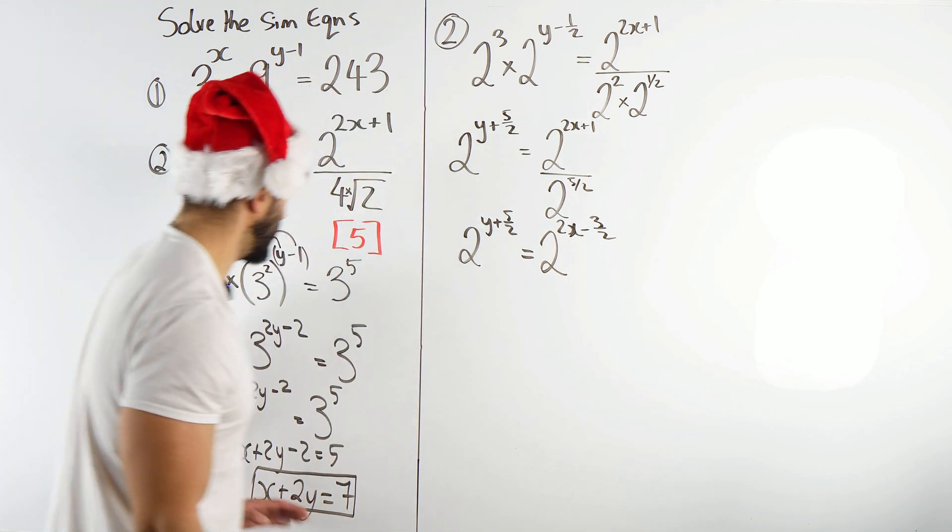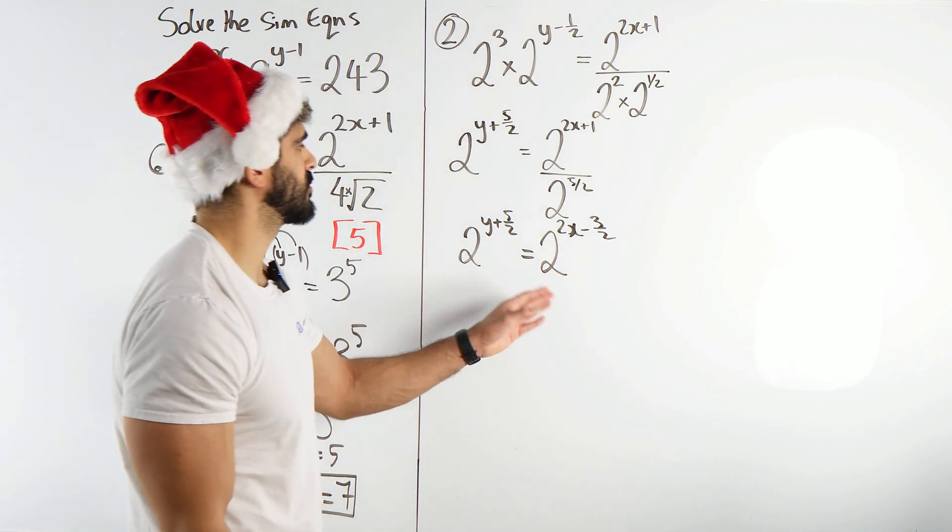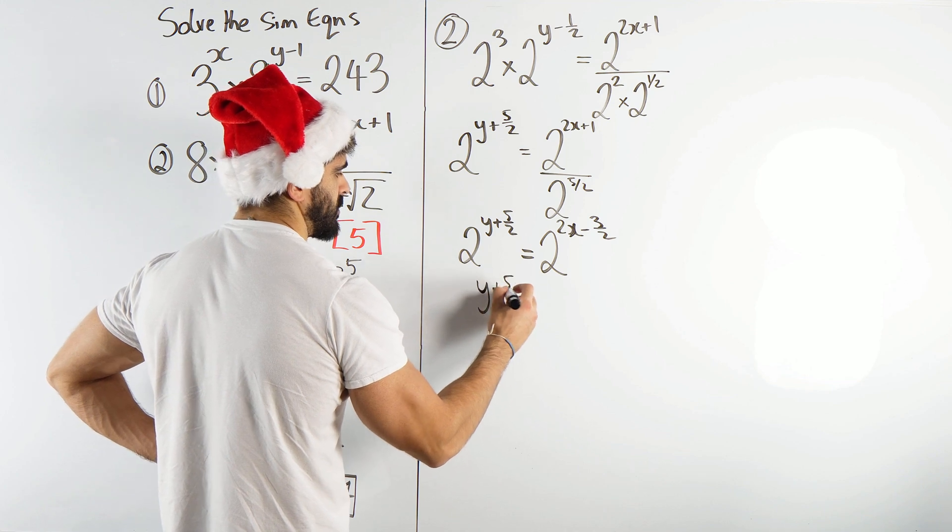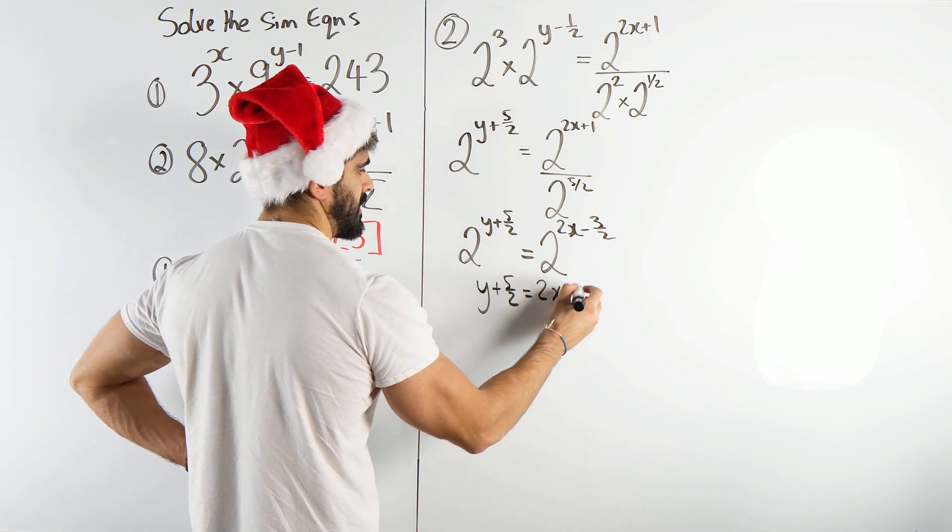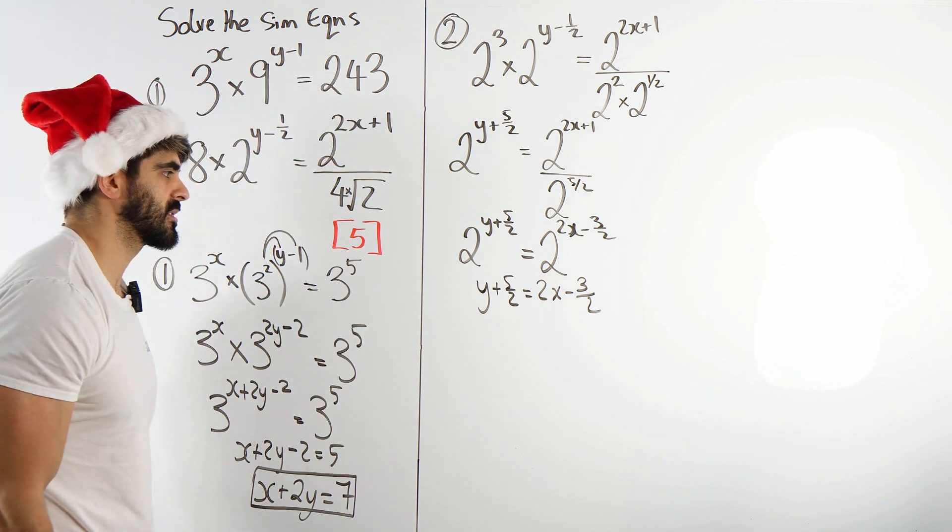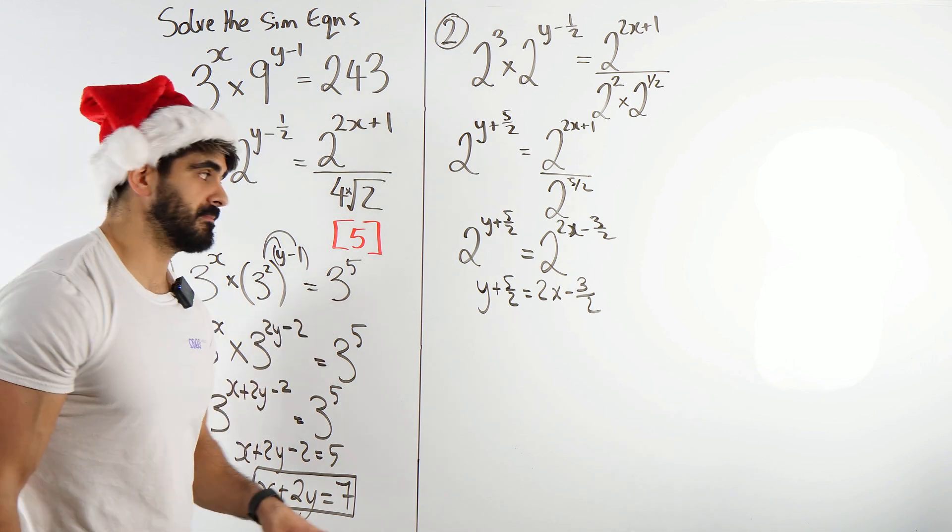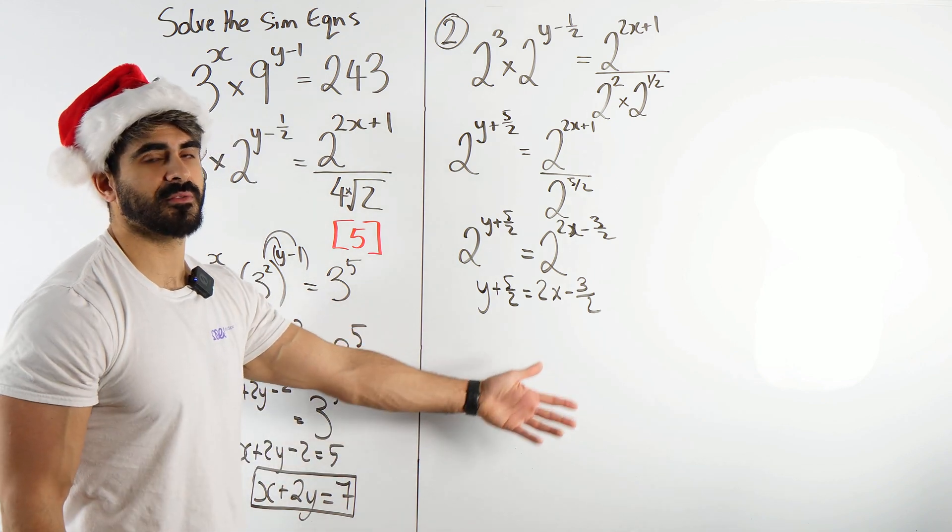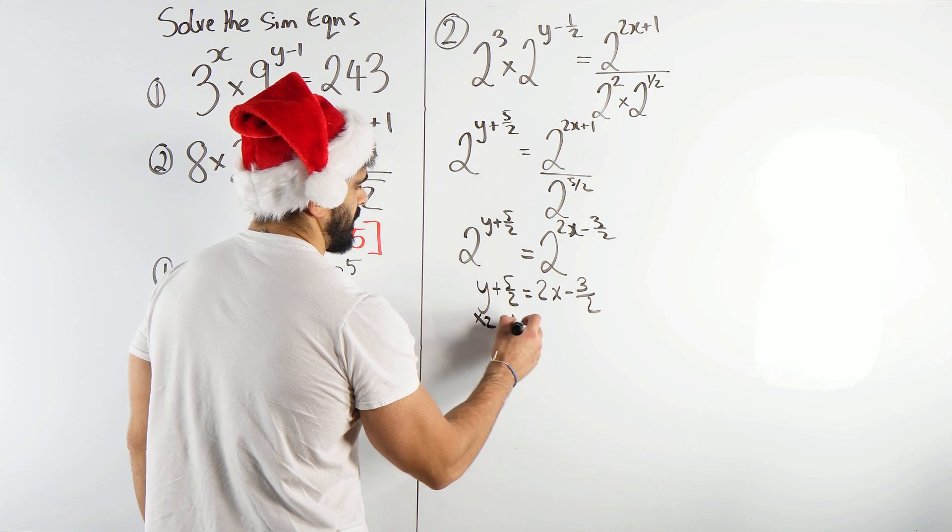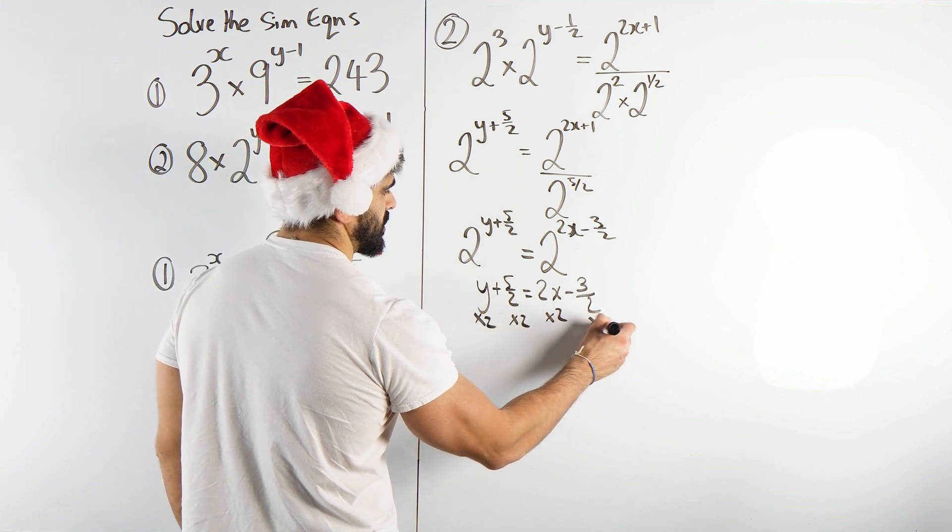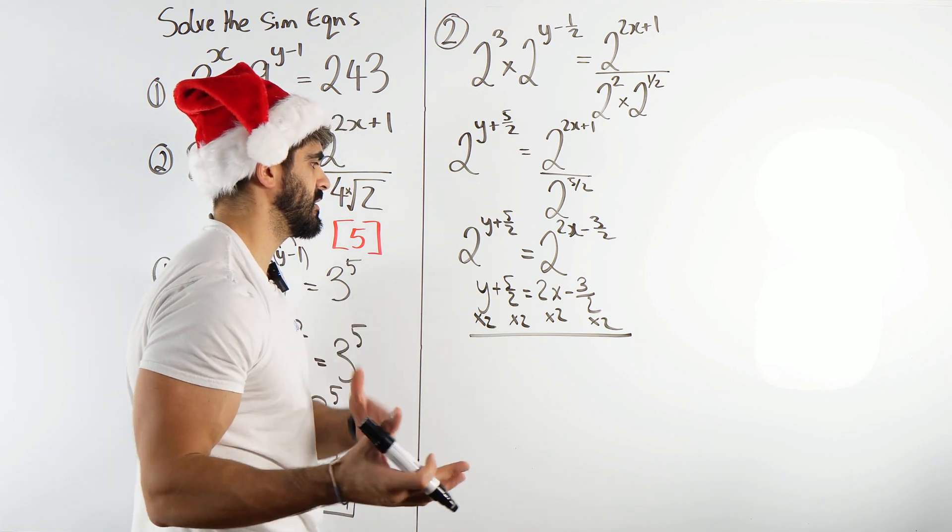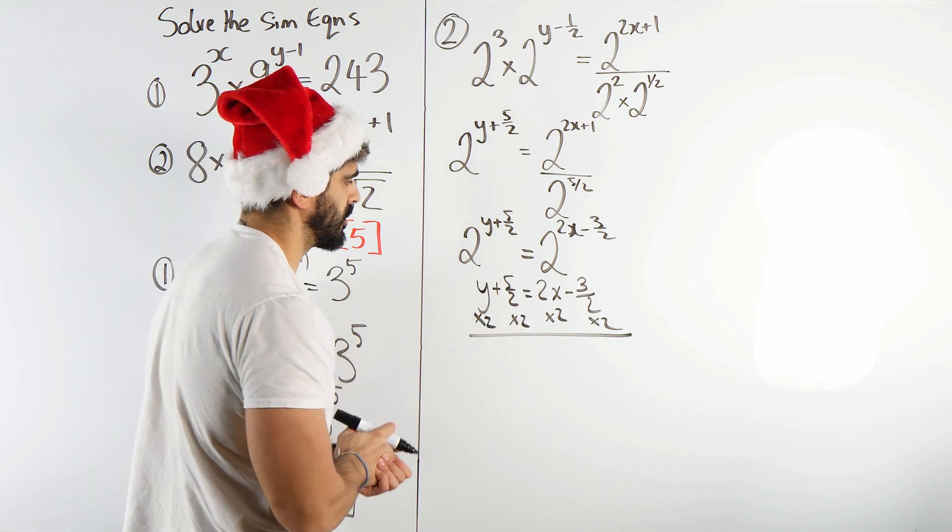And just like the other one, where we had the base 3's the same, here we have the base 2's the same, so the powers are the same. So we have y plus 5 over 2 is 2x minus 3 over 2. Now this obviously looks horrible. So how can we clean this up? Well one thing I would do, especially if it was non-calc, this is obviously calc, you could just add that over and move things around. I'm not using my calculator at the moment. I would double everything to just get rid of denominators. I think even if it is a calculator question, I think it's good for you guys to learn different methods, just in case it came up in a non-calculator paper.